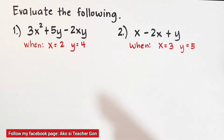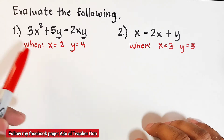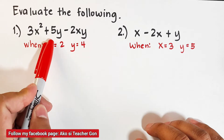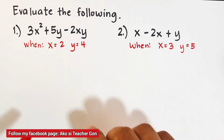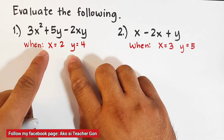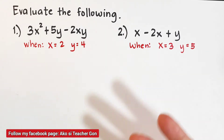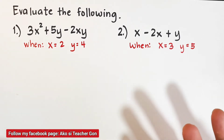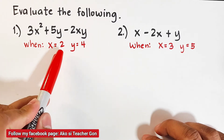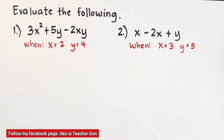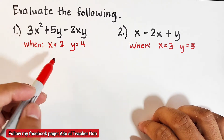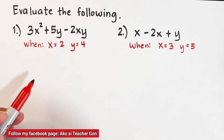So what does it mean to evaluate a given expression? Given this expression — 3x squared plus 5y minus 2xy — we will evaluate them given the specific values of the variables x and y involved. What we need to do is substitute these values into the given expression and then evaluate it by performing the different operations. Let's try number one: we have 3x squared plus 5y minus 2xy.